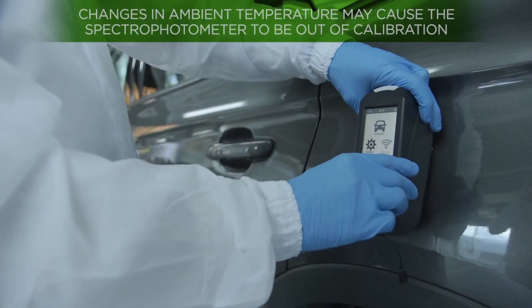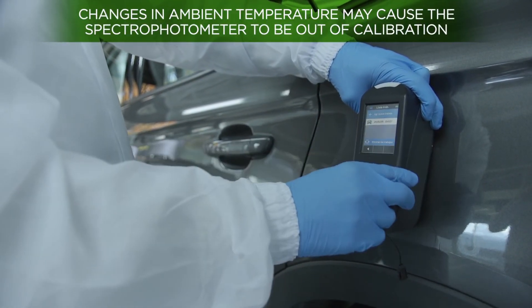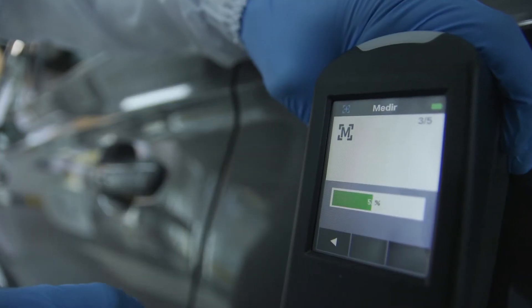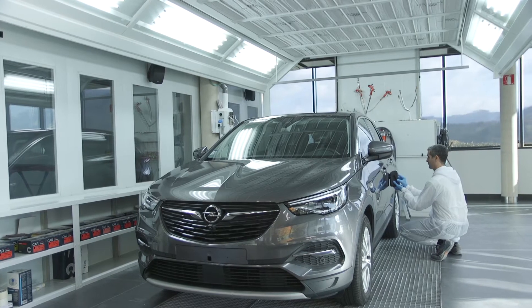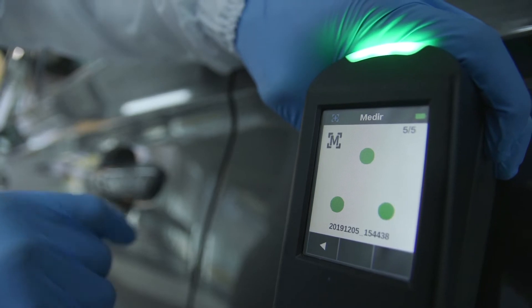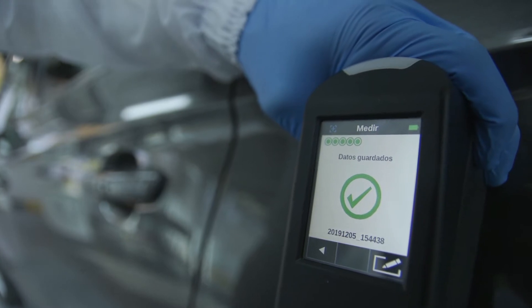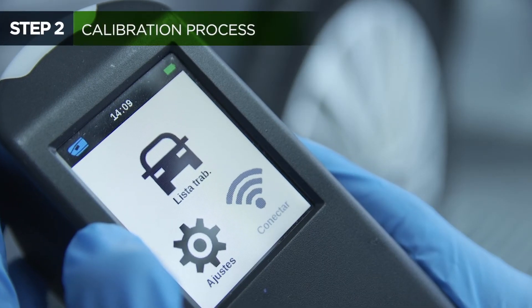Be aware that the spectrophotometer can get out of calibration due to sudden changes in ambient temperature. According to the manufacturer's instructions, the calibration process should be carried out at least every 14 days. Our recommendation is to do it on a daily basis as the time required is minimal in relation to its benefits.